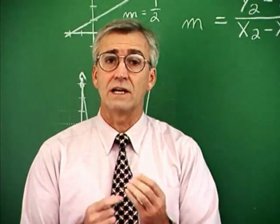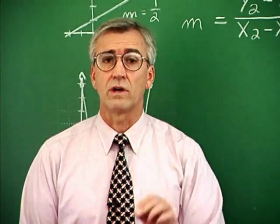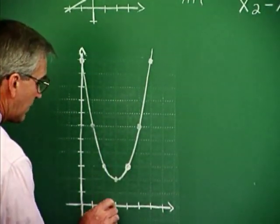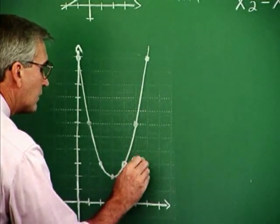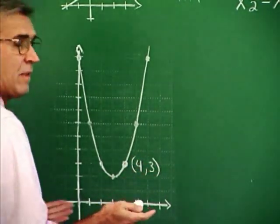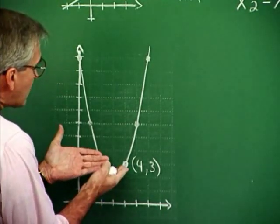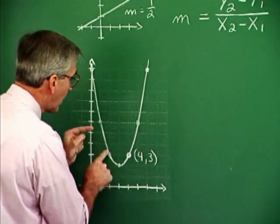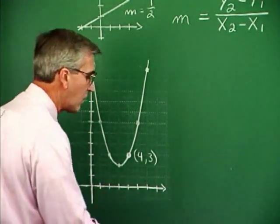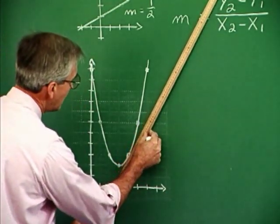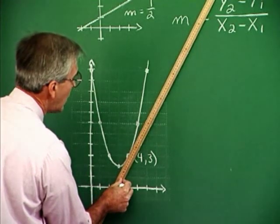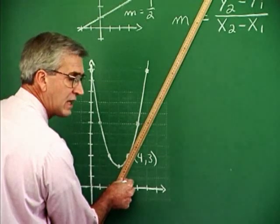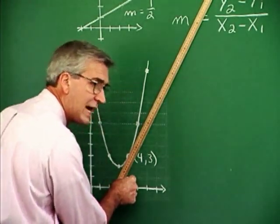We're concerned about the idea of identifying the rate of change at a particular point on the graph. Now, consider a point like this point. And this is the point 1, 2, 3, 4, 3. So here's the point 4, 3. We'd like to know something then maybe about the rate of change at that point. The rate of change at that point corresponds to the slope of a line which is tangent to this graph at that point.